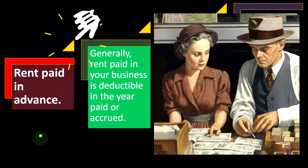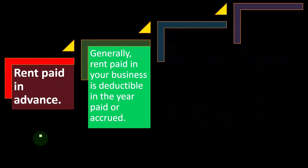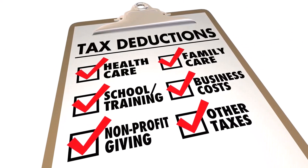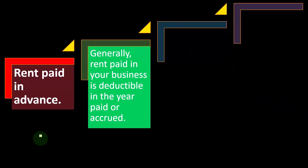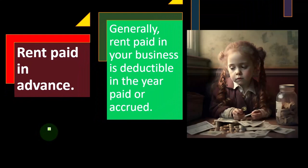Rent paid in advance: note that you might be on an accrual system or a cash-based system. On a cash basis, you normally take the deduction when cash is paid, but you can start to manipulate this — for instance, by paying three years of office rent on December 31st to deduct it all in one year because your income was substantially higher that year. The IRS frowns upon that kind of activity and has put rules in place against it.